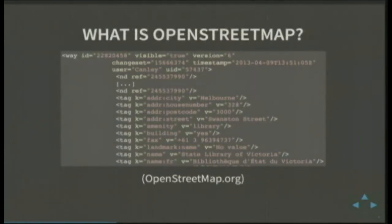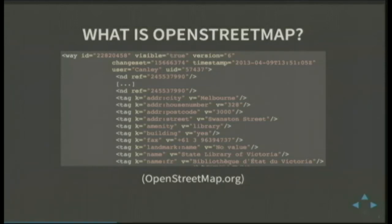This is also an OpenStreetMap representation. This is some of the XML code that's used to represent data internally when you do an export of it. That is a single item in OpenStreetMap — an object that describes the State Library of Victoria. And that's all the information they've got in OpenStreetMap about the State Library.